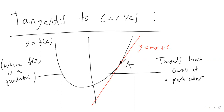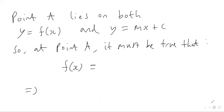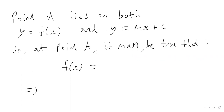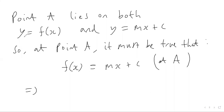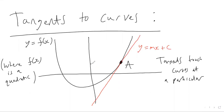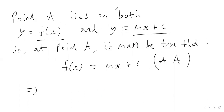Since we've got the line y equals mx plus c touching the quadratic curve at point A, we know that point A lies on both the curve y equals f of x and the line y equals mx plus c. So it must be true that at point A, f of x equals mx plus c, because the two graphs touch each other at this point, so the y coordinates must match.